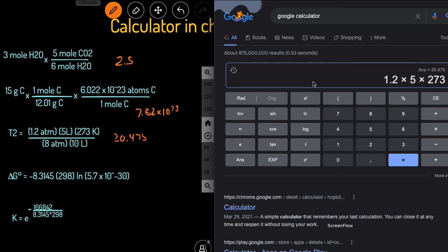But the other way that you can enter this is you could do 1.2 times 5 times 273. And then you could just divide by 8. And then you can also divide by 10. So if you don't want to use parentheses, if it's numbers on bottom, just divide by those numbers. So divide by 8 and also divide by 10. And you still get the 20.45.